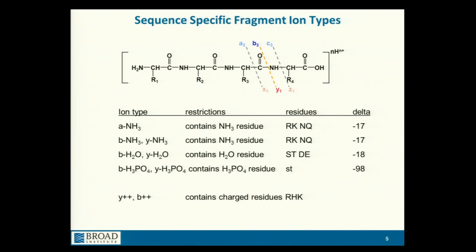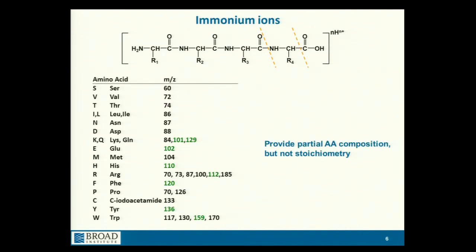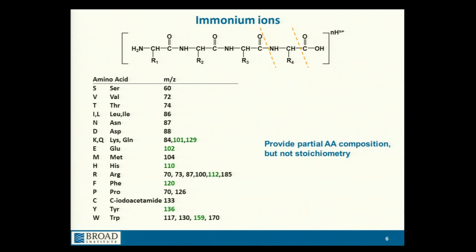Most of what we're going to talk about today is B and Y ions, but it is actually possible using a technique called electron transfer dissociation to produce C and Z type ions, and we'll see a little bit about that. In the case where you can get multiple fragmentations of a single ionized species, you can actually get composition information — if you fragment at two positions of a single ion, you isolate a piece referred to as an immonium ion. Since it contains the side chain, we can get composition information.